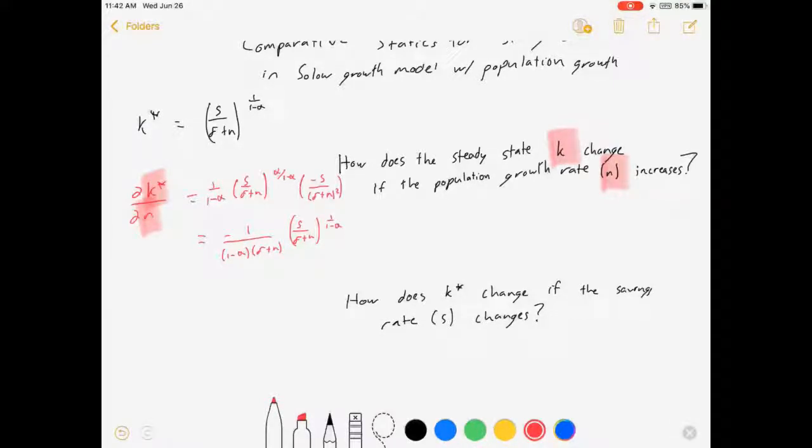Now, for standard parameter values, this thing will come out as being negative, which means that as our population growth rate increases, the stable amount of capital per worker will fall.